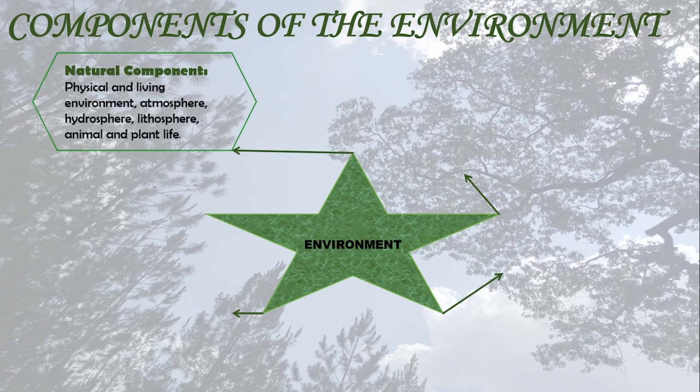Then we have the lithosphere. With the lithosphere, we talk about the different continents — for example, Asia, Africa, Europe — and the mountains, such as the Rocky Mountains, Mount Everest, and Kilimanjaro. Then we talk about the deserts, for example the Sahara Desert and the Gobi Desert, which is found in China and southern Mongolia.